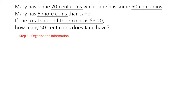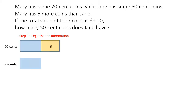Step one: let's organize the information. We're going to use a comparison model to illustrate the difference between the number of 20 cent and 50 cent coins. Based on the question, we know that there are 6 more 20 cent coins compared to 50 cent coins. So these 6 coins have a value of $1.20. We also know the total value of the 20 cent and 50 cent coins is $8.20.